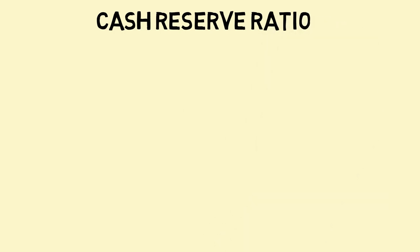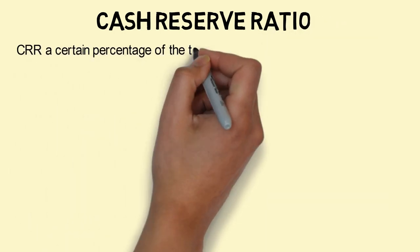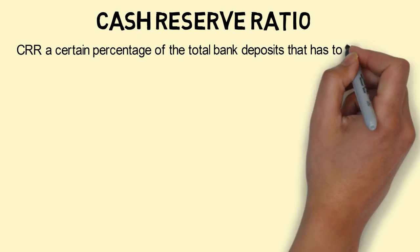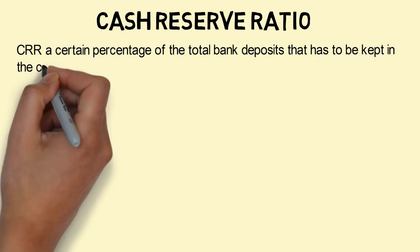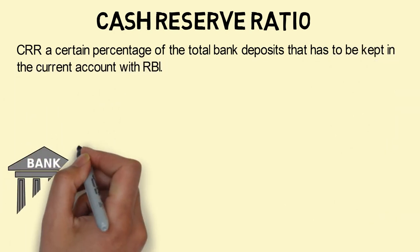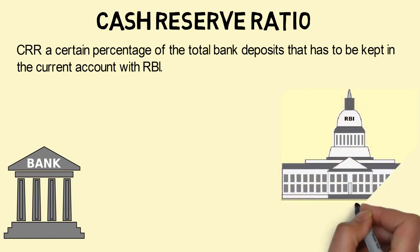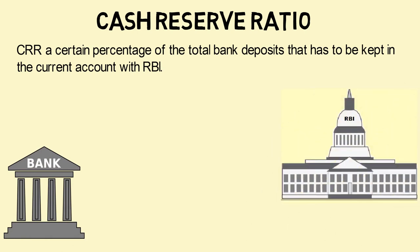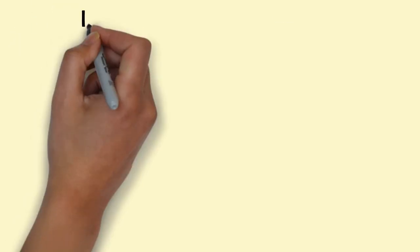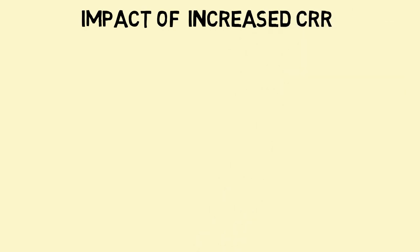The first tool is Cash Reserve Ratio (CRR). CRR is a certain percentage of total bank deposits that has to be kept in the current account with RBI. This is the money that commercial banks need to keep with RBI.